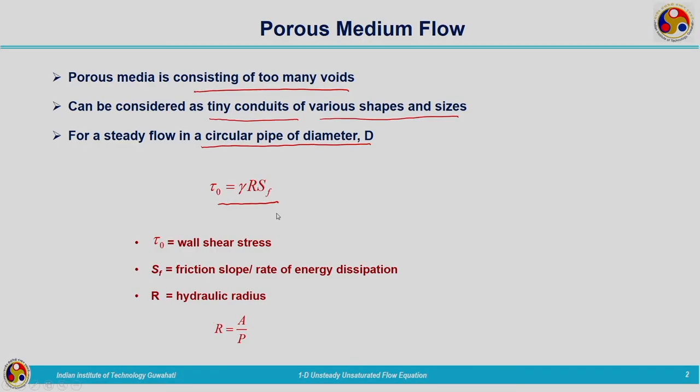Energy dissipation is represented by means of friction slope. This is based on the consideration of friction force, and we can get the expression for wall shear stress given by gamma R Sf. In the case of a pipe, we will be considering R as D by 4, where D is the diameter of the pipe. Area is pi over 4 times D squared, and perimeter is pi D. So R is equal to A by P, which can be written as D divided by 4.